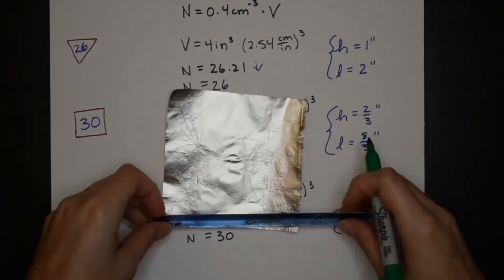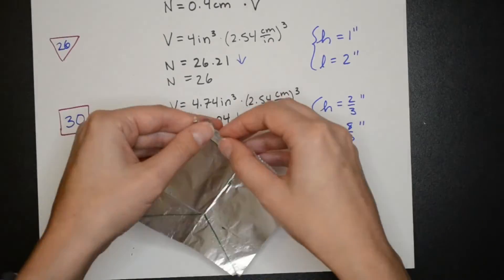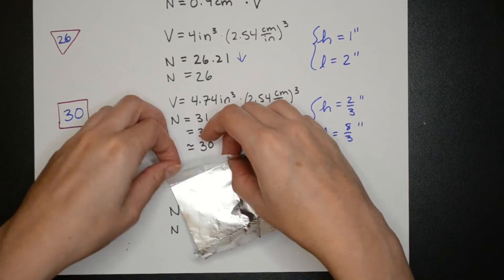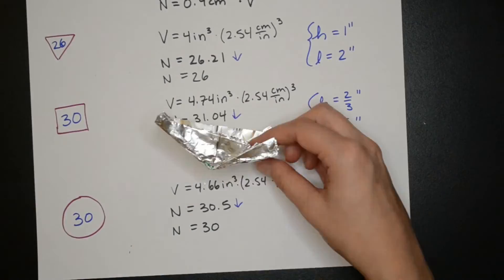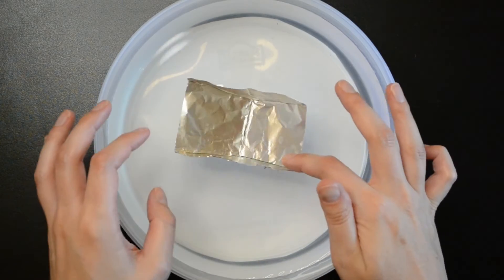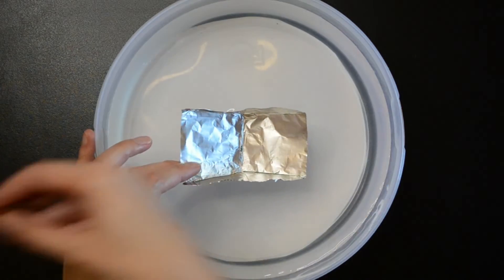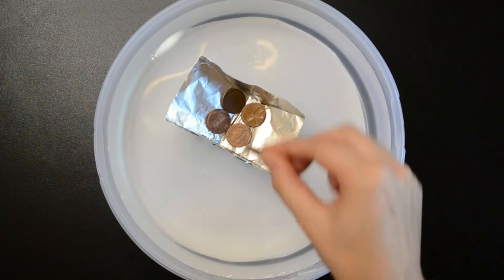The first shape I'm going to make is the canoe. With this boat when you put it in water it likes to tip to one side so I'm going to hold on to it while I load the first few pennies just to make sure it doesn't fall over.